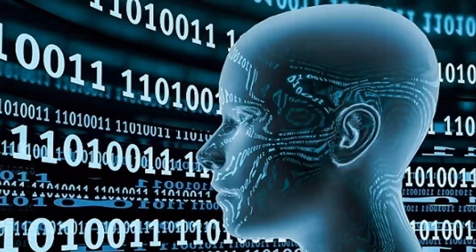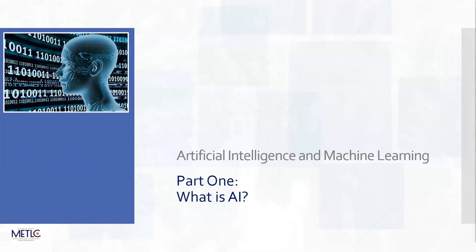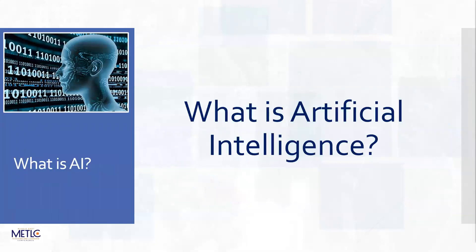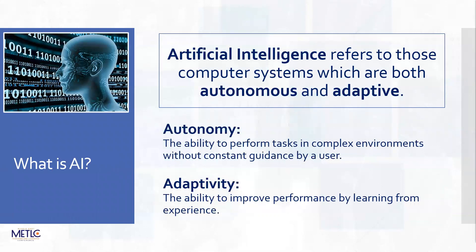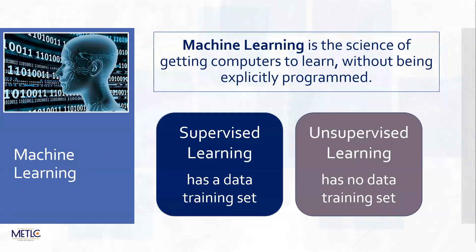So let's start - what is AI? We hear about it a lot and it plays an enormous part in our lives. Well it refers to a particular type of computer system which is both adaptive and autonomous. It can work on its own and perform complex tasks, but it's also adaptable - it can learn, and that aspect is called machine learning.